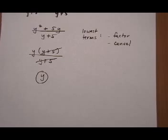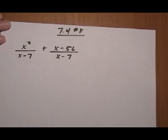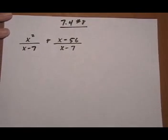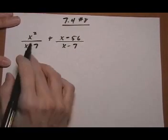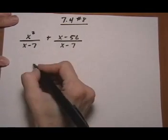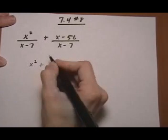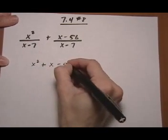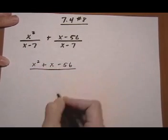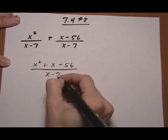And let's try one more. 7.4 number 8. Again, we have common denominator already. So we're going to go right ahead and add across the top. x squared plus x take away 56 over the common denominator of x take away 7.